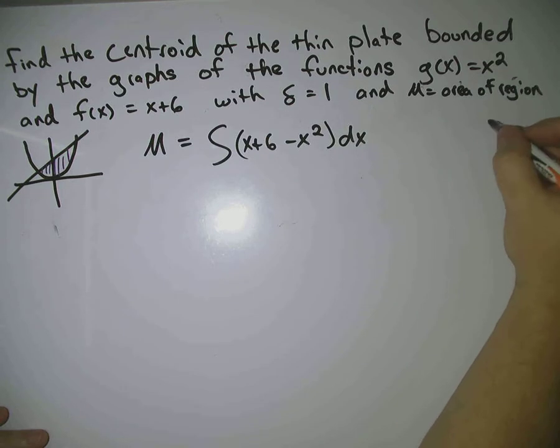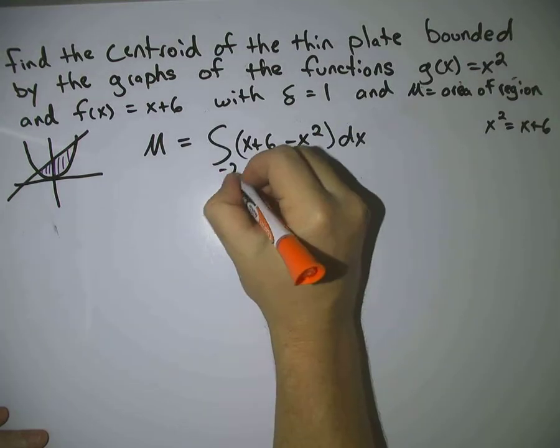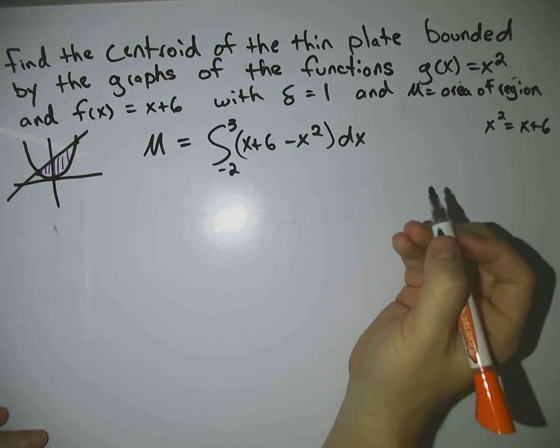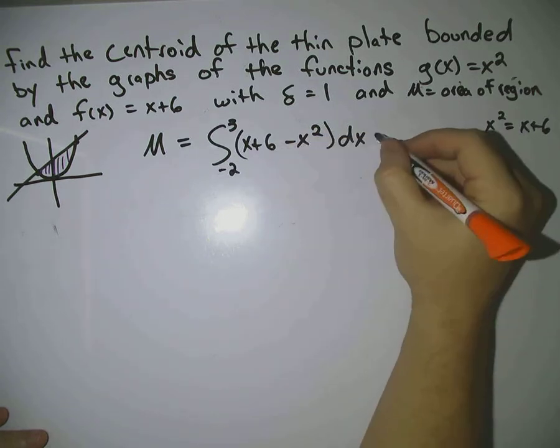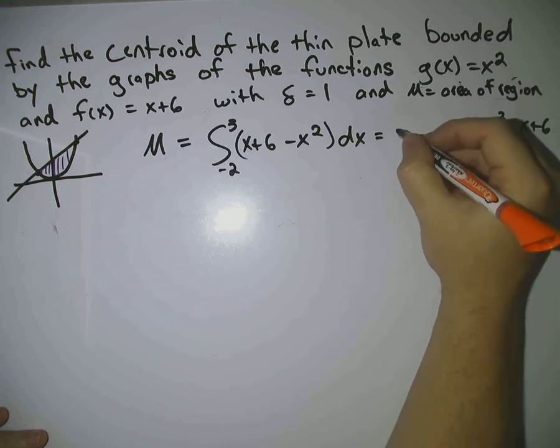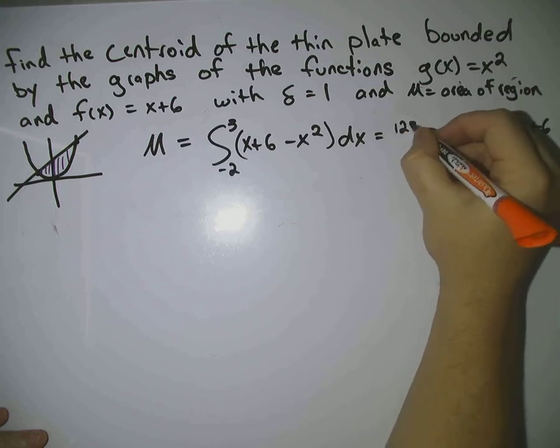Our limits, you can find the limits by setting x squared equal to x plus 6, solve that down there, and you get negative 2 and 3 as your intersection points here. So to solve this integral, I'm not going to work all that out, but you do get 125 over 6.